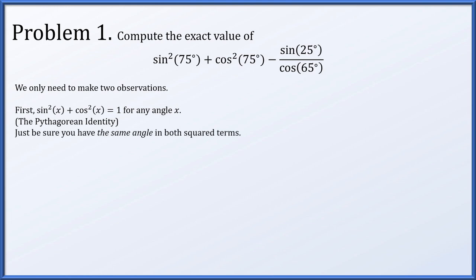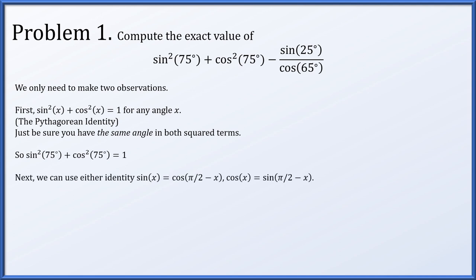Just be sure you have the same angle in both terms. Sine squared of one angle plus cosine squared of the same angle can always equal one. So sine squared of 75 degrees plus cosine squared of 75 degrees is equal to one.